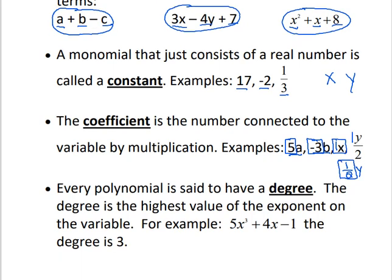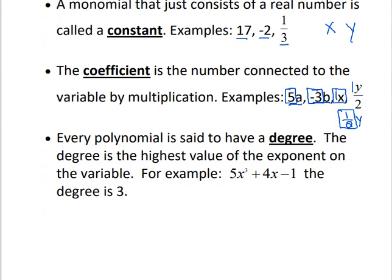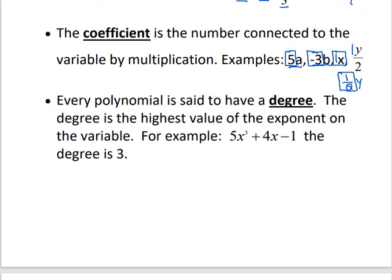Every polynomial is also said to have a degree. The degree is the highest value of the exponent on the variable. For example, in this trinomial — which has three terms — the highest exponent is 3, so that's the degree of this trinomial. Whatever the biggest exponent is, that's the degree.